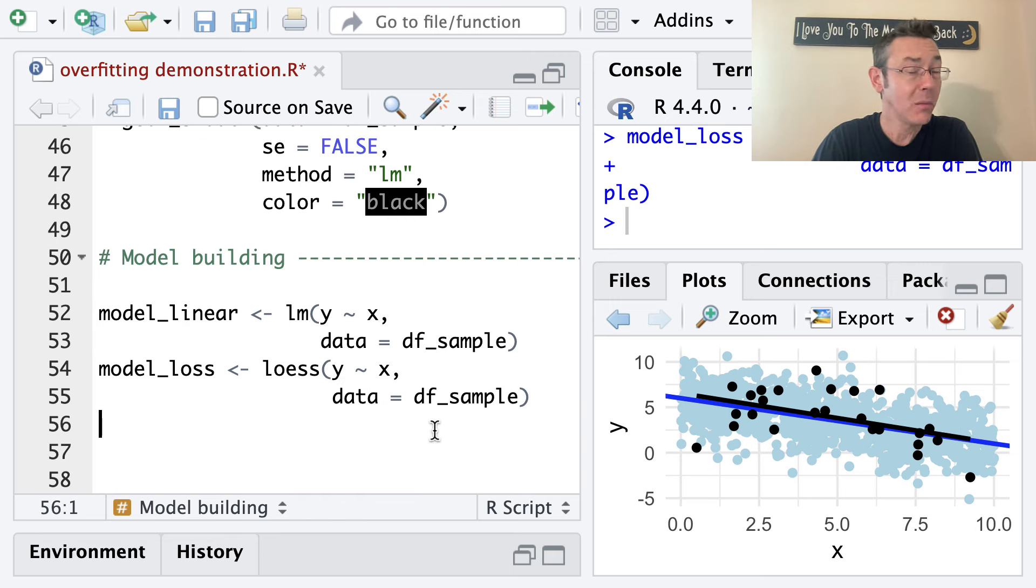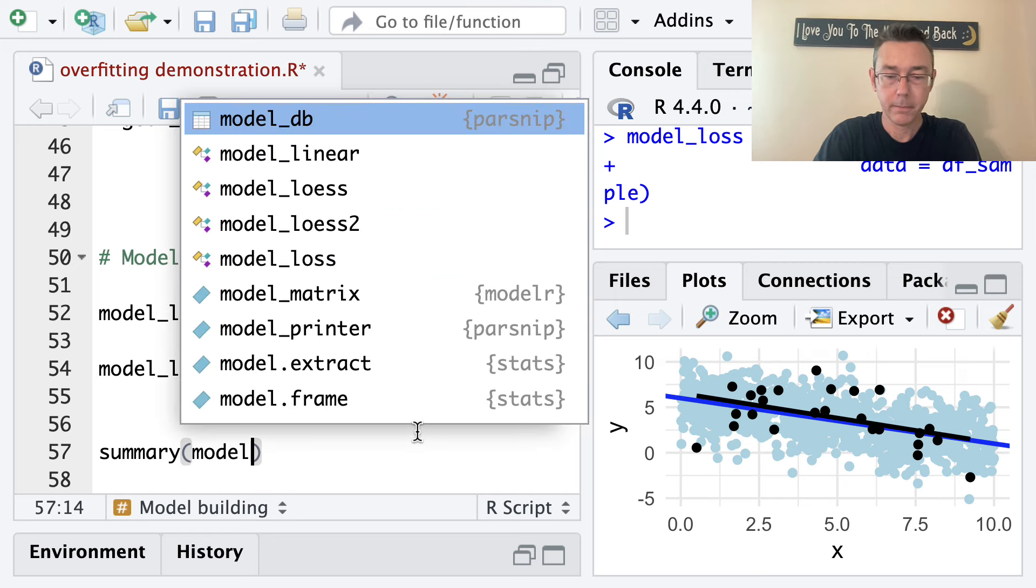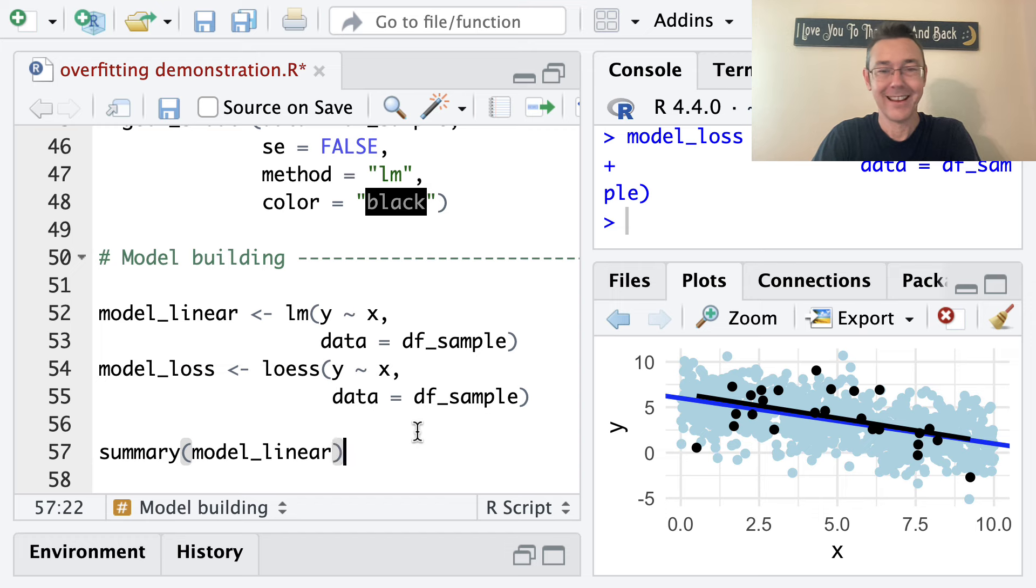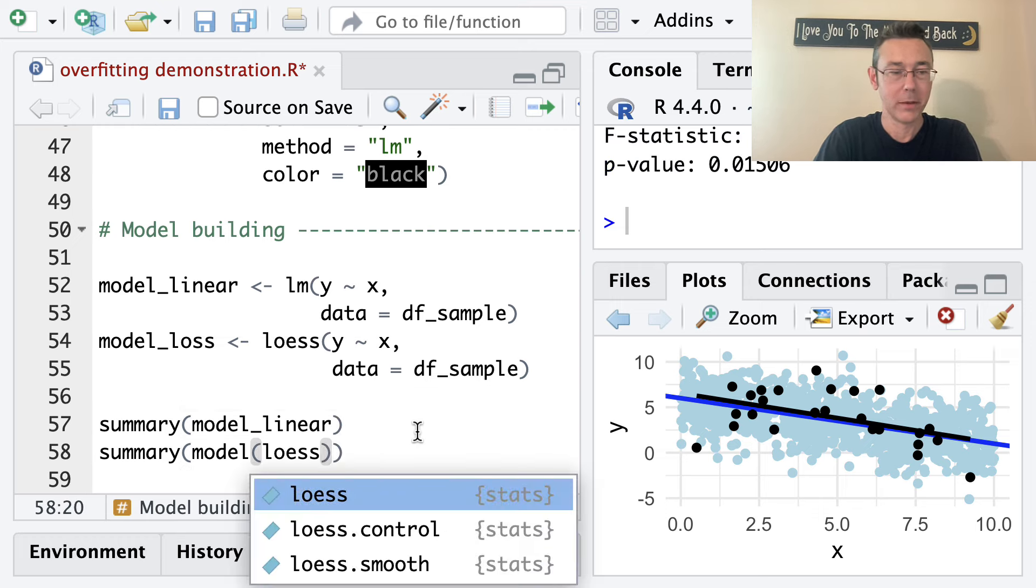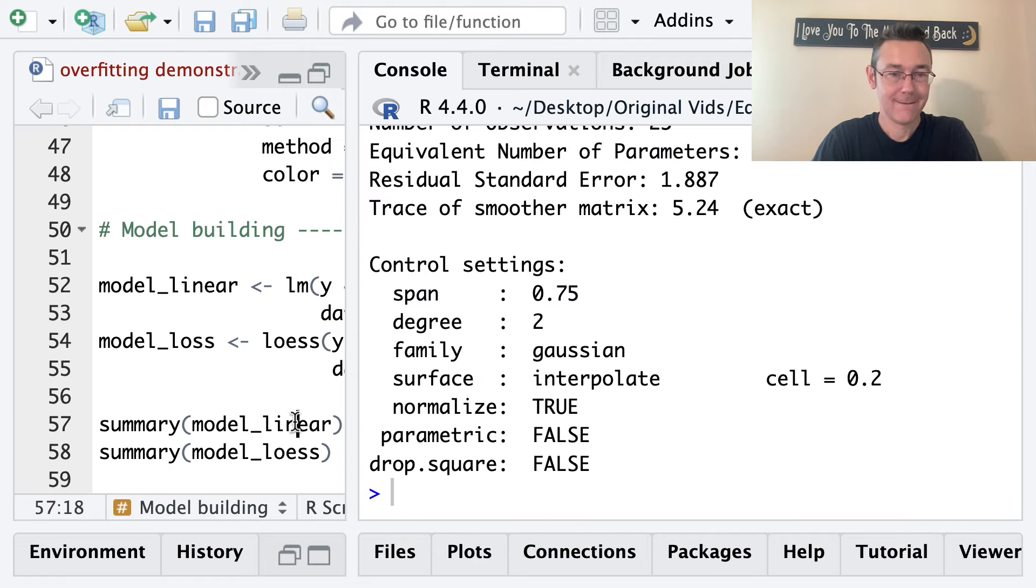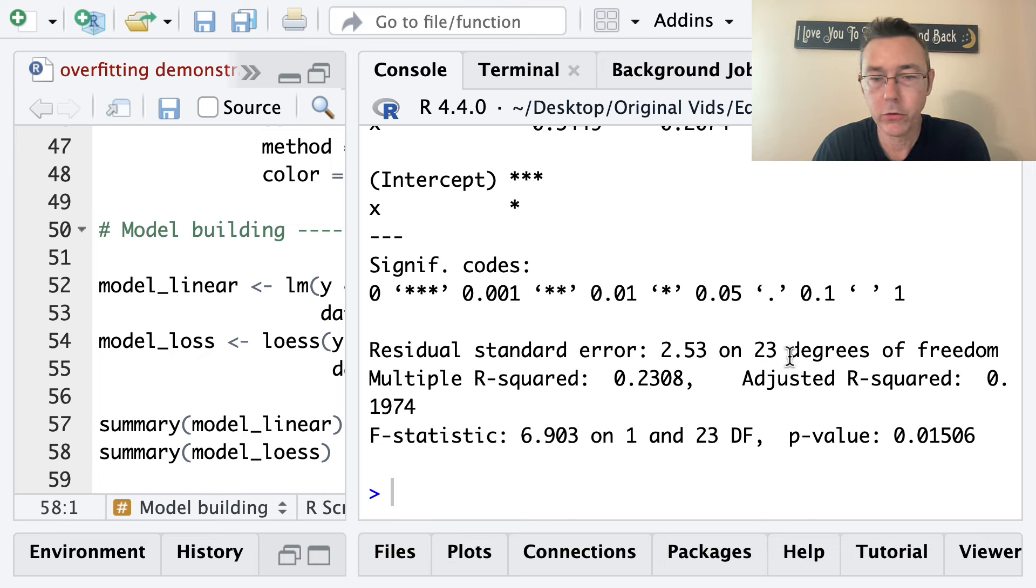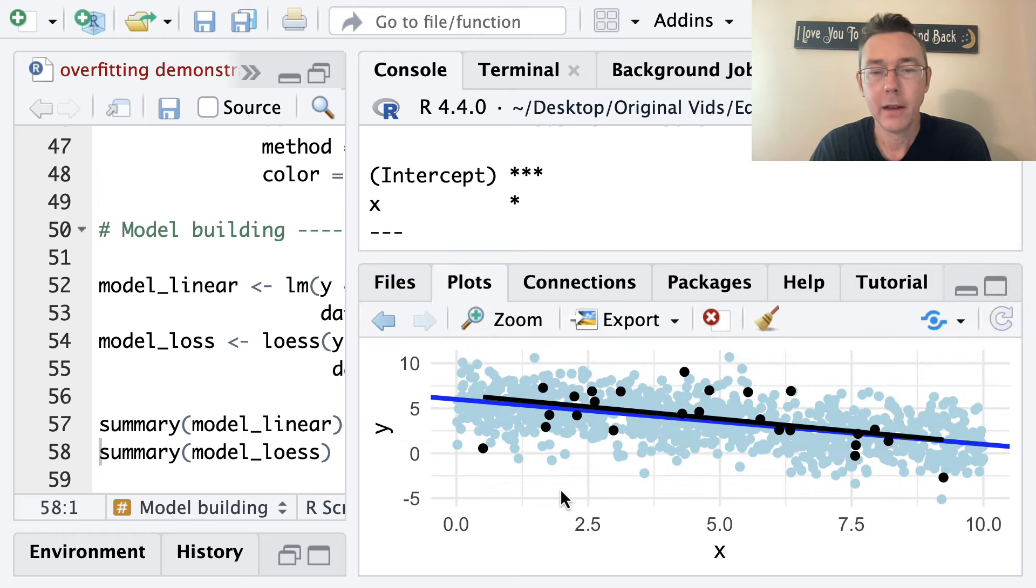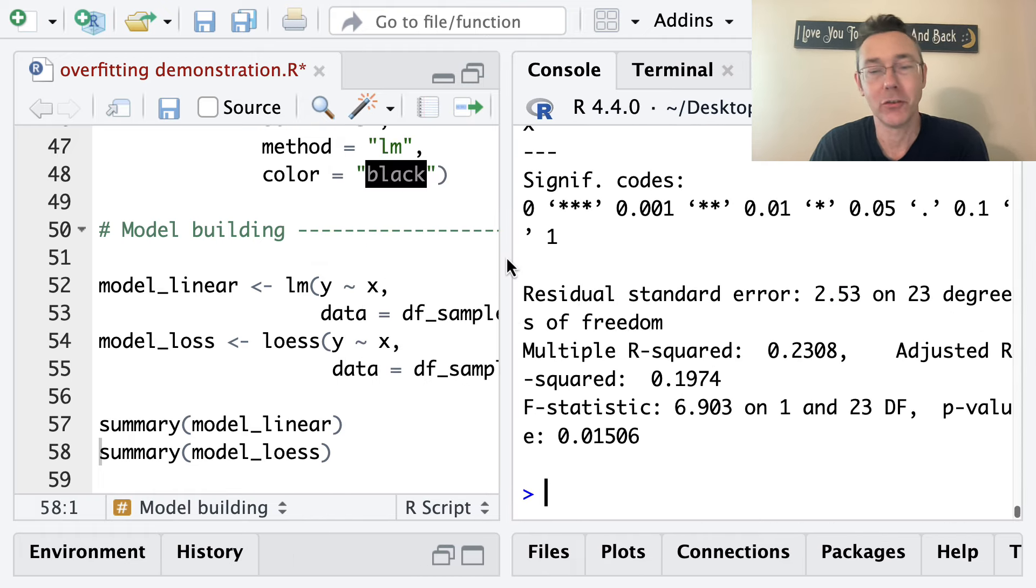Okay, great. So I can get a summary on each of those to see how they did on the data that's used to train them. So let's do summary of model_linear. And we'll do summary of model_loess. And I'll adjust my panes so that you can see all this a little bit better here. Okay, so for model_linear, I just want to point out the residual standard error of 2.53. And we interpret this to mean, roughly speaking, that the average actual data point in this data set is about 2.53 units vertically away from that regression line. And if we look at the plot, that's certainly plausible. That's not fully mathematically exactly correct, but I think it's a good intuition to have.